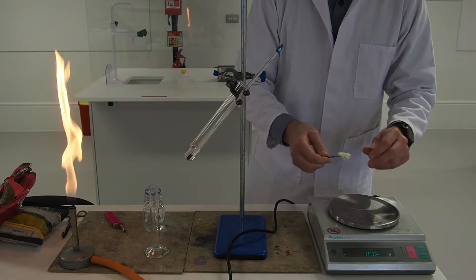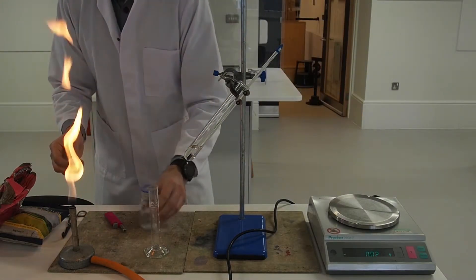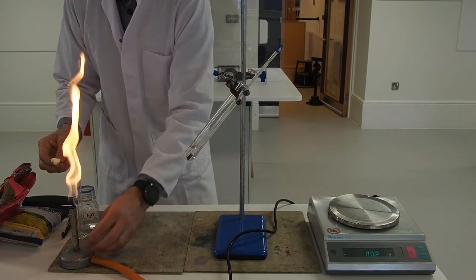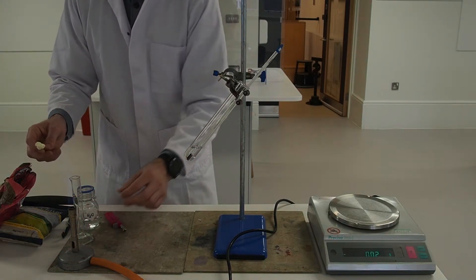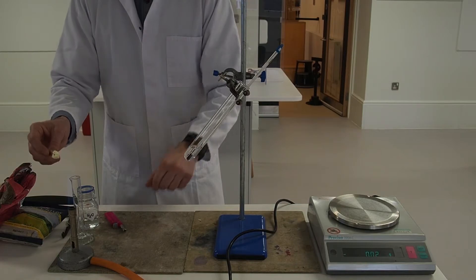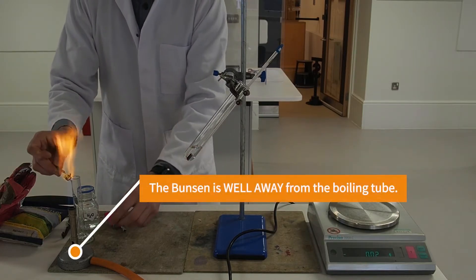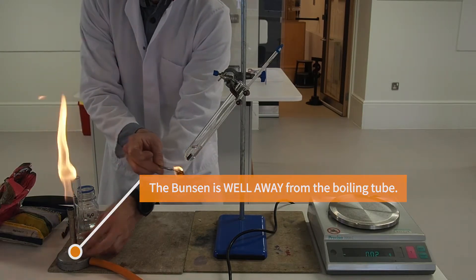We set fire to the food at a distance far enough away from the boiling tube so that the Bunsen burner isn't actually influencing the temperature of the water that we're going to measure. Once the food is lit it's transferred quickly underneath the boiling tube.